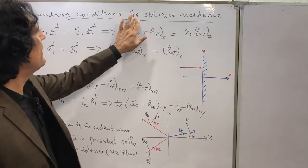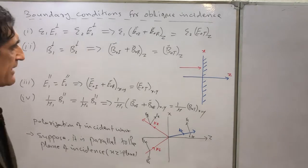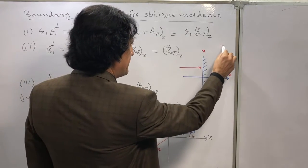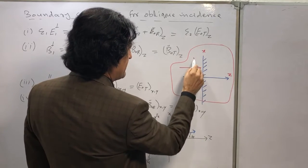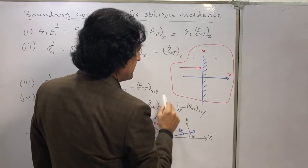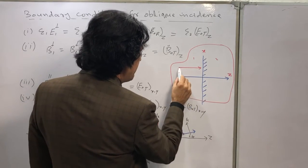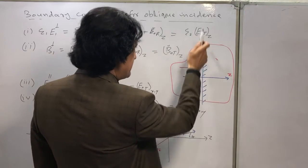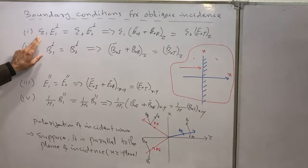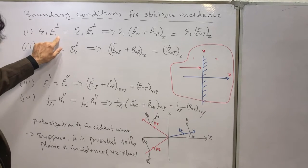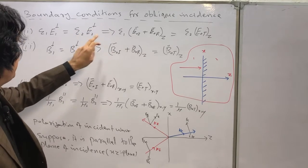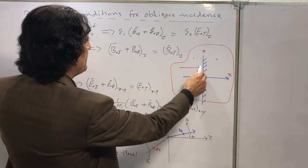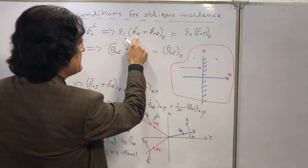Here we consider the boundary condition for oblique incidence. In this figure, medium one and medium two are separated by a boundary, and a wave is propagating along the z direction. The boundary condition for this figure can be written as: ε₁·E₁⊥ = ε₂·E₂⊥, where E₁ includes the incident component and E₂ includes the transmitted component.